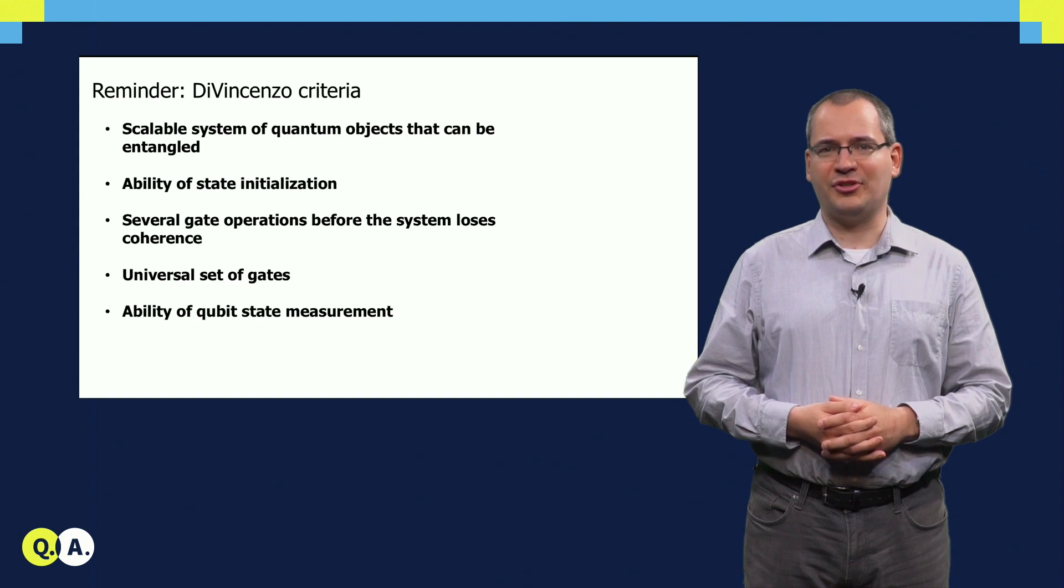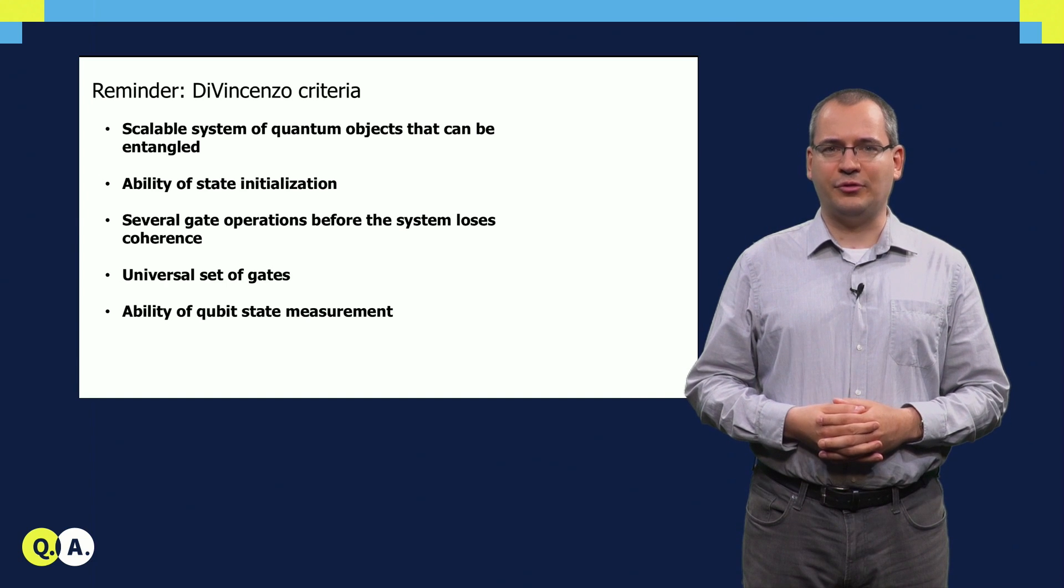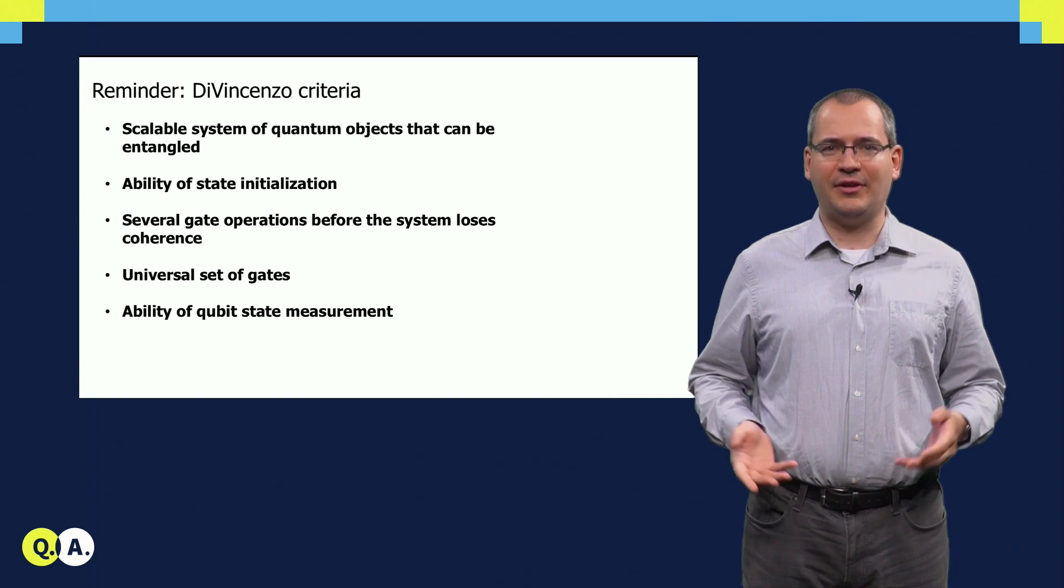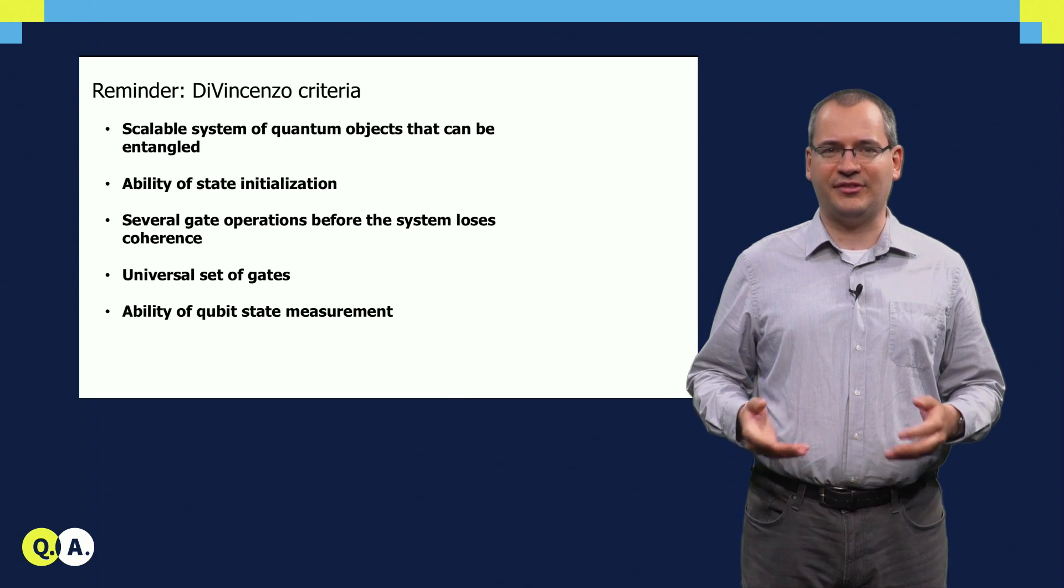We need a scalable system of quantum objects on which we operate. These will be our qubits. We first have to initialize our qubits. Then we have to be able to do several gate operations before this system loses coherence.